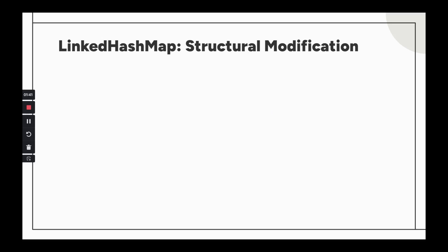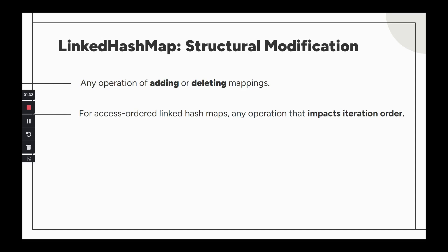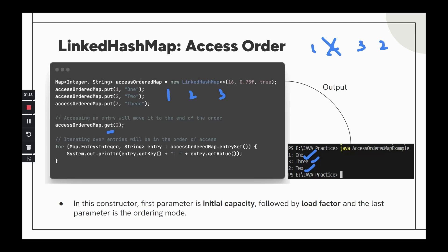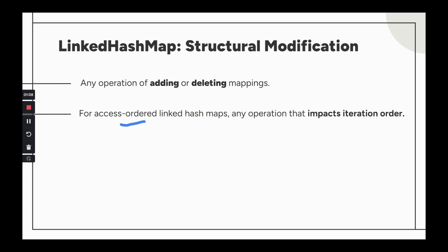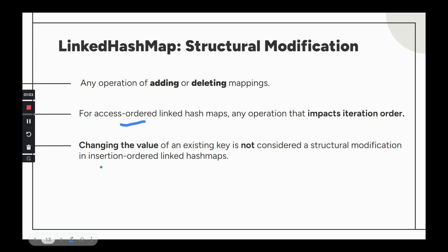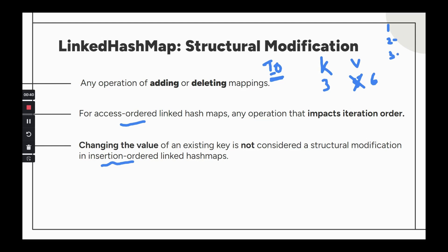Structural modification refers to operations that impact the iteration order. For access-ordered LinkedHashMap, even a get() operation is a structural modification since it moves the accessed node to the end. For insertion-ordered LinkedHashMap, changing the value of a key is not a structural modification — if you insert one, two, three and update a value, the insertion order is not violated.